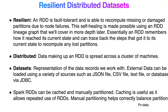Breaking down the name RDD: 'Resilient' means an RDD is fault-tolerant — it is able to recompute missing or damaged partitions due to node failure. This self-healing is made possible using an RDD lineage graph, which we'll cover in depth in a later lecture. Essentially, an RDD remembers how it reached its current state and can track back steps to recompute.